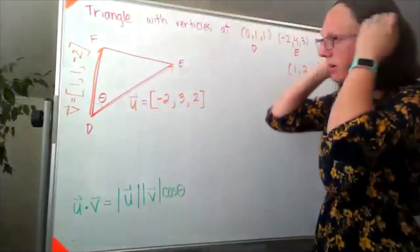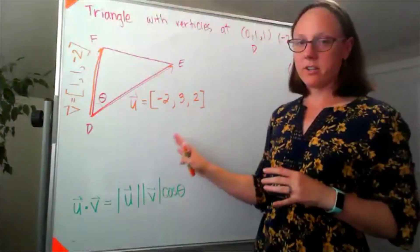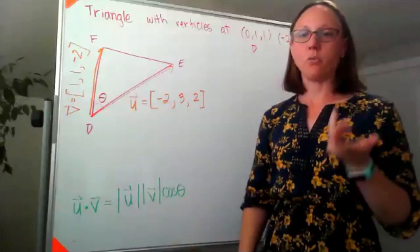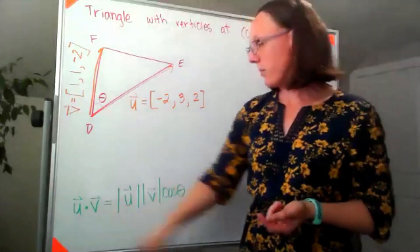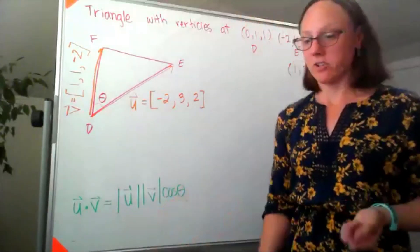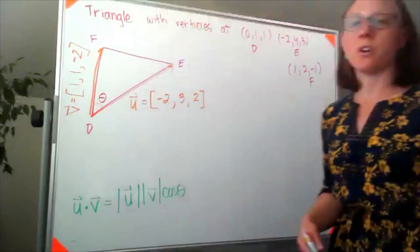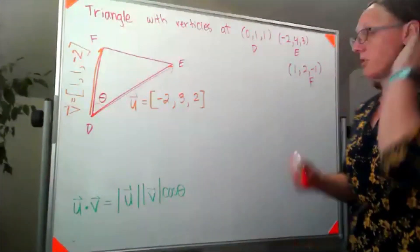Now I've got my two vectors, I'm almost ready to use the formula. I need to do two things. I need to find the dot product and I need to find the magnitudes. Doesn't matter which one we do first, I'm going to go ahead with the magnitudes.